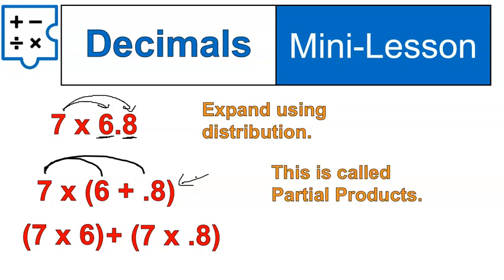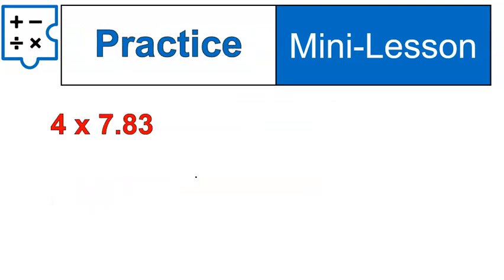It's also called something. This is called partial products. When we take a number like that, and we sort of spread it on out to make hopefully some mental math a little bit easier. And let's practice a little bit with it.